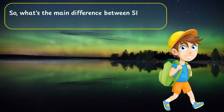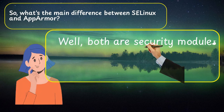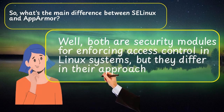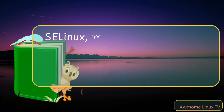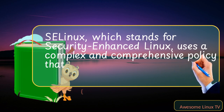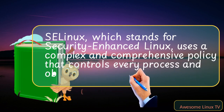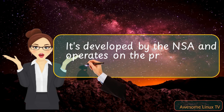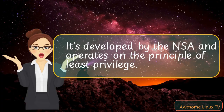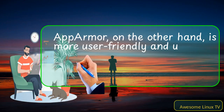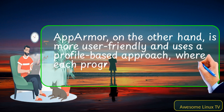What's the main difference between SELinux and AppArmor? Both are security modules for enforcing access control in Linux systems, but they differ in their approach. SELinux, which stands for Security Enhanced Linux, uses a complex and comprehensive policy that controls every process and object in the system. It's developed by the NSA and operates on the principle of least privilege. AppArmor, on the other hand, is more user-friendly and uses a profile-based approach, where each program has its own profile.